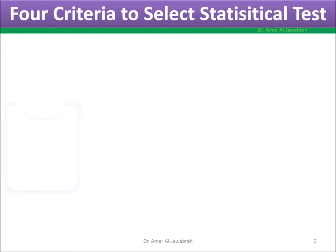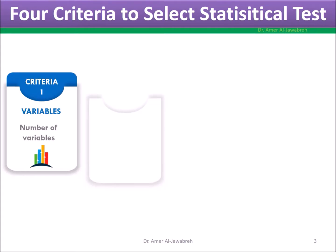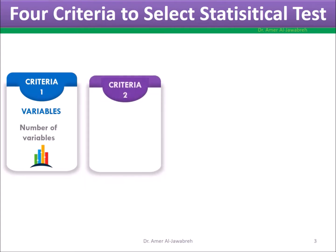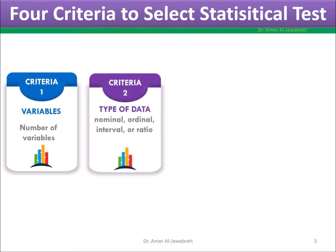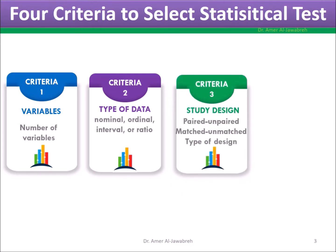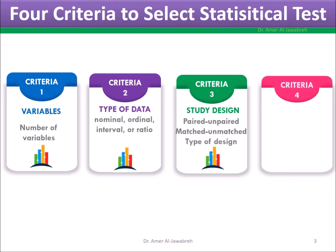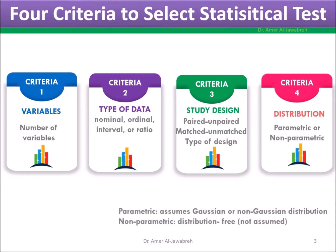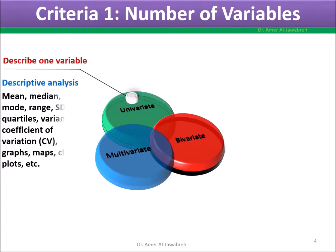There are four criteria to select statistical tests. Criteria 1: number of variables. Criteria 2: type of data — nominal, ordinal, interval, or ratio. Criteria 3: study design — paired or unpaired, matched or unmatched. Criteria 4: distribution — parametric (Gaussian or non-Gaussian) or non-parametric (distribution not assumed).